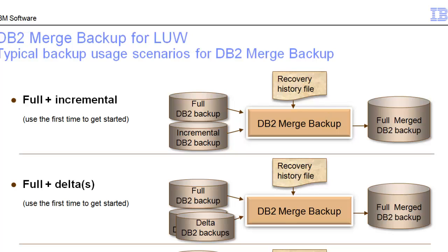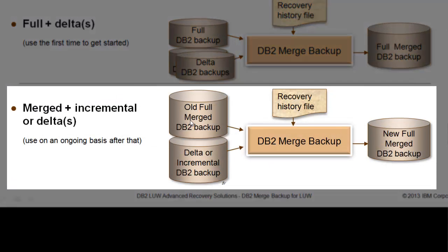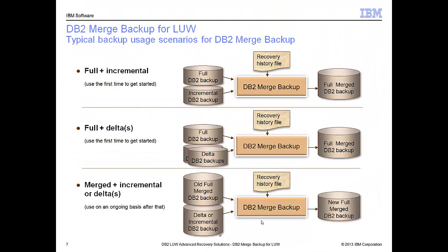These are now written to the recovery history file with a new backup type called M. But for all intents and purposes, that merge backup is just like having a full backup. That means you can take the old full merge backup from your last merge backup process, add your deltas or incrementals, merge them again, and get yet another new full merge backup. So you can do this pretty much indefinitely. The only time you may need to use the DB2 engine would be if you were to upgrade your database to a new version. But as long as you're staying on the same version of DB2, you would never have to take a full DB2 backup using the backup command again.